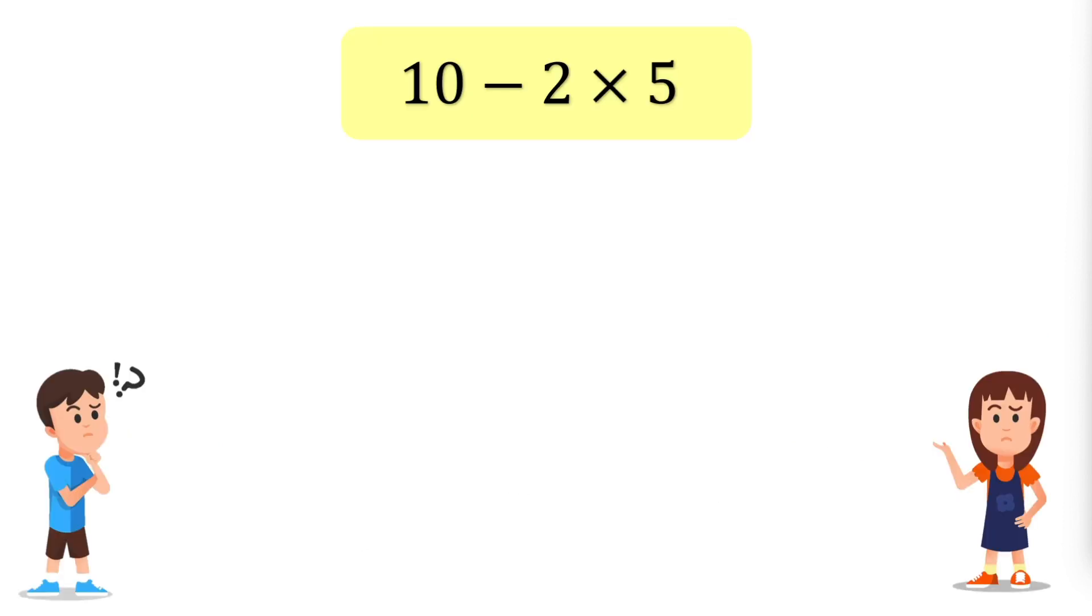When you simplify a numerical expression, there's a specific order you must follow to make sure everyone gets the same answer. Take this expression as an example. It involves two operations.